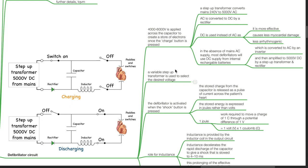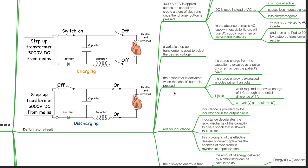In the absence of mains AC supply, most defibrillators will use DC supply from internal rechargeable batteries, which is converted to AC by an inverter, then amplified to 5000 volts DC by a step-up transformer and rectifier. A variable step-up transformer is used to select the desired voltage. The defibrillator is activated when the shock button is pressed, and the stored charge from the capacitor is released as a pulse of current across the patient's heart.